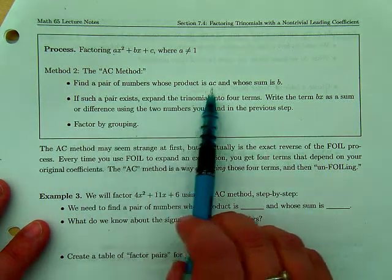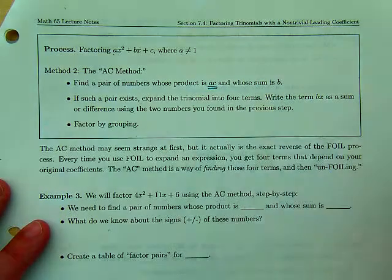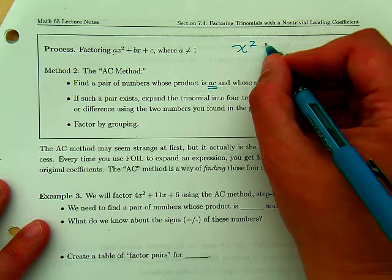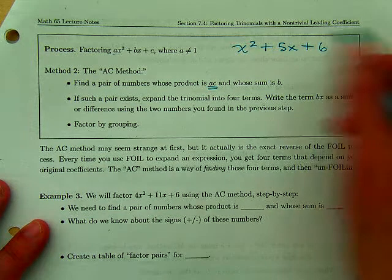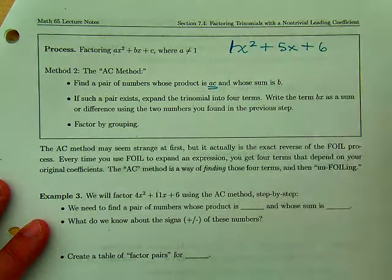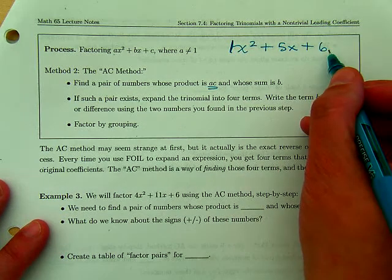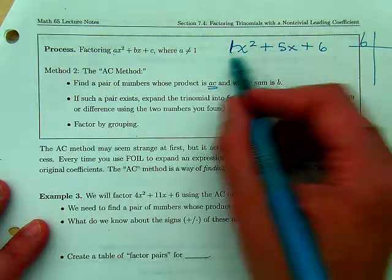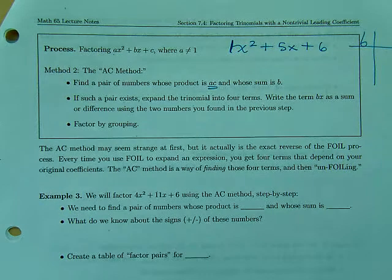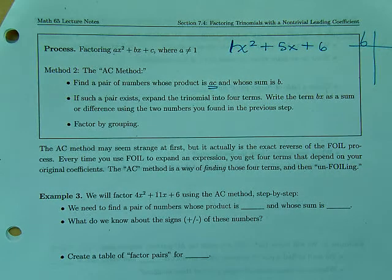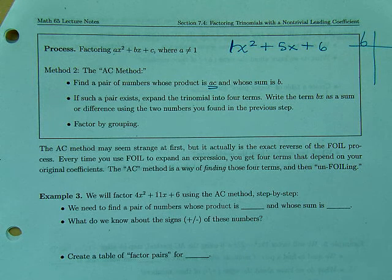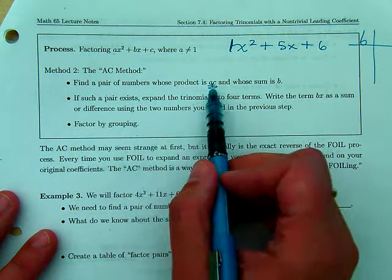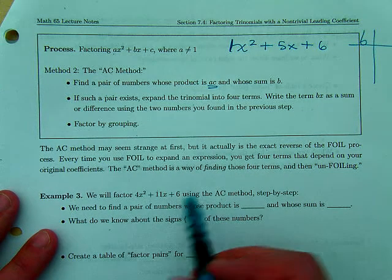So here's how the AC method works. We're going to find a pair of numbers whose product is ac. See, in the past, if you had something like x² + 5x + 6, right? If a is 1, 1 times 6 is 6. So when we were factoring 6, we were really factoring 1 times 6, which meant that 1 was trivial because 1 times anything is just itself.